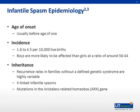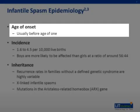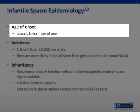Infantile spasm epidemiology. Age of onset: the majority, up to 90% of affected children, present at less than one year of age, with the range from one day old to 4.5 years. The peak incidence of onset, 50% to 77%, is between three and seven months of age. Onset after 18 months is rare. The true age of onset may be uncertain in infantile spasms, as they are commonly mistaken for other conditions.